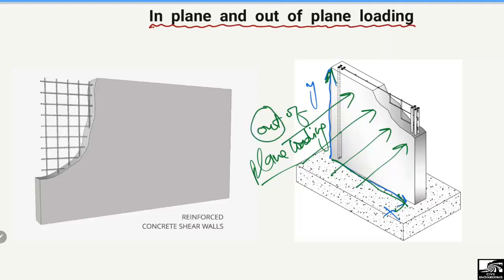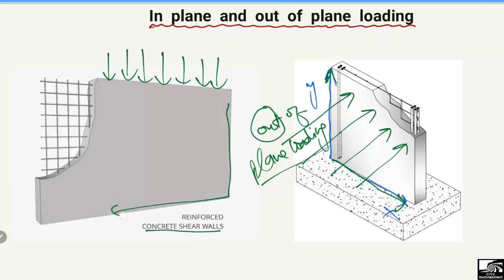Now consider a second example: a reinforced concrete shear wall. When the load acts parallel to this wall — for example, along the y-axis — and since the y-axis and x-axis make the plane of the member, such type of load is called in-plane loading, because it is acting in the plane of the member.